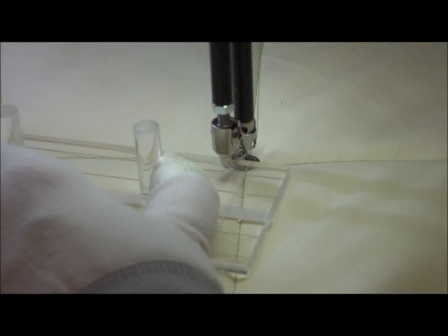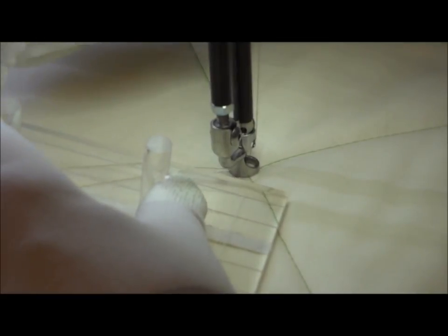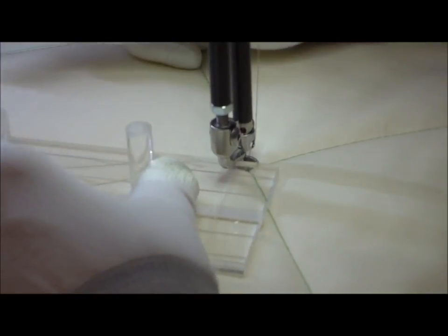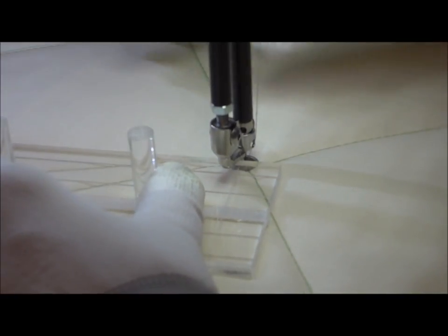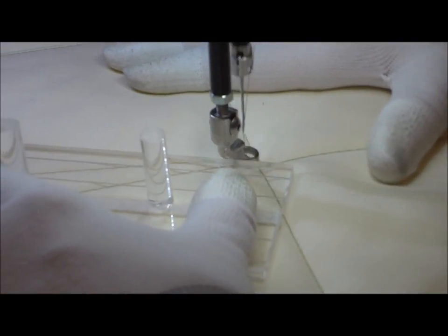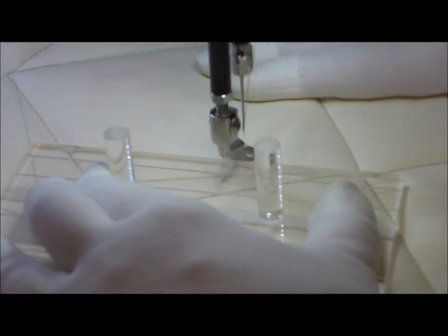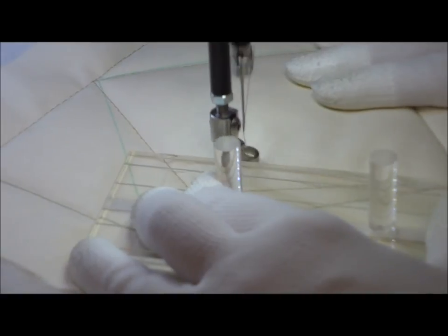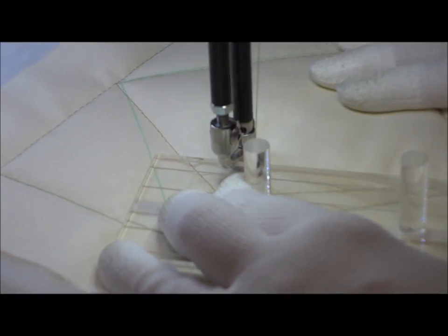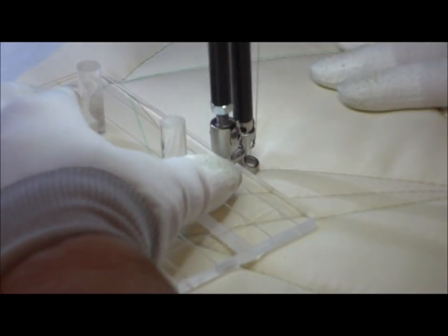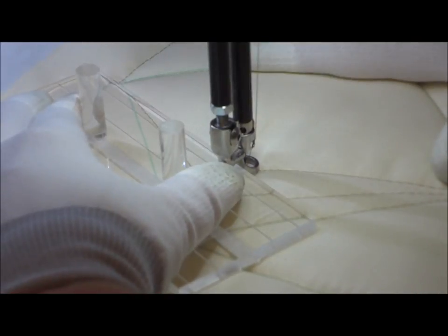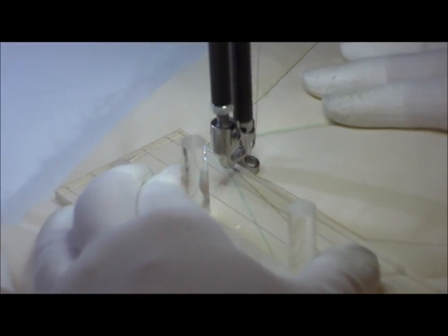Now we're ready to stitch the second boomerang on this side of the diamond. Again, we're going to keep that one inch mark away from where we want the inch to be like we had on our grid. We're going to go to that center mark and then stitch all the way back up to the top pivot point.